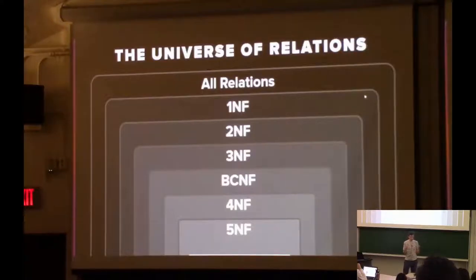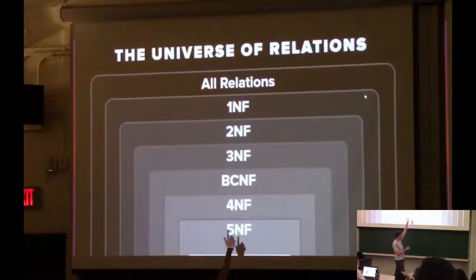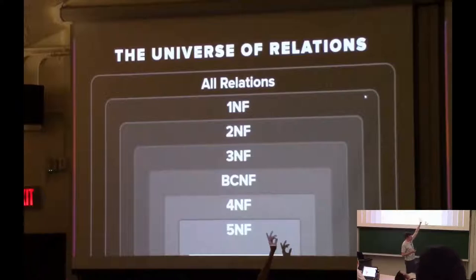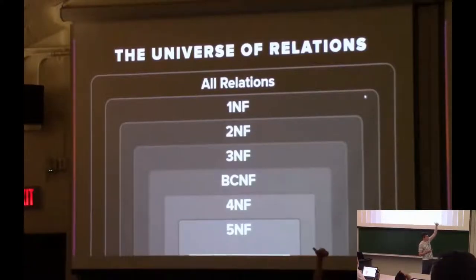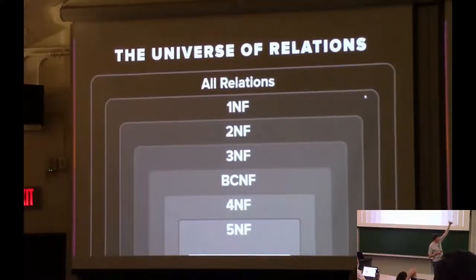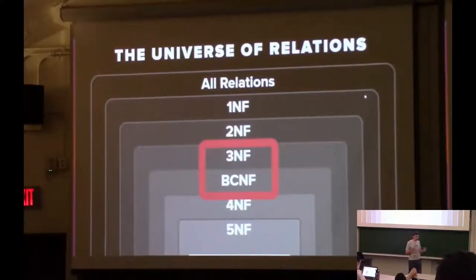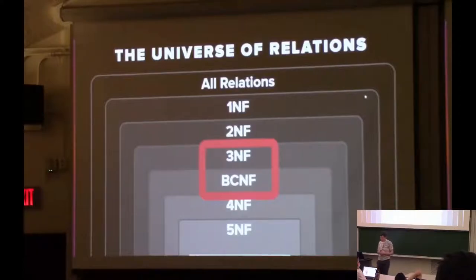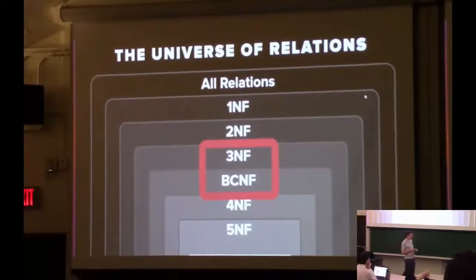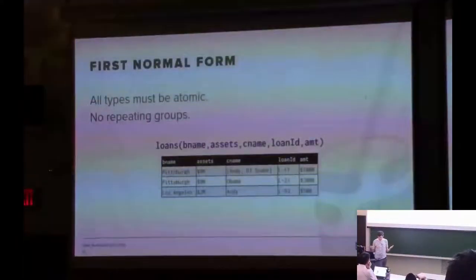Another way to think about this is as a hierarchy: if you're in a higher-level normal form, you're automatically in the lower ones too. If your schema is in 3NF, it's also in 2NF and 1NF. The ones we care about most — 3NF and BCNF — are the most practical and make the most intuitive sense, whereas the higher normal forms like 6NF get into hardcore information theory with little real-world applicability.